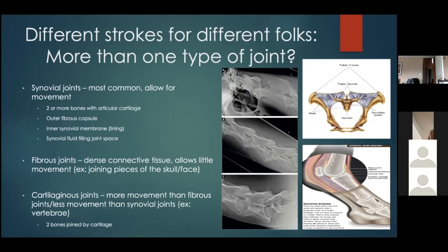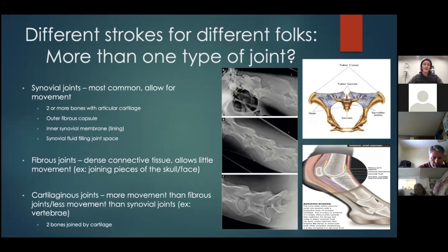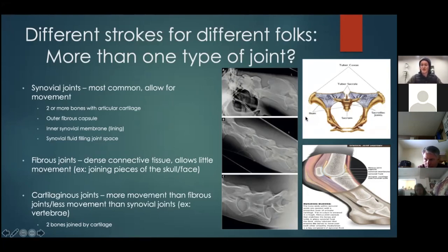The last type is cartilaginous joints — these are the in-between type: more movement than a fibrous joint but less than a synovial joint. The easiest example to think of is the vertebrae, where two bones are joined by cartilage but aren't fully encapsulated.